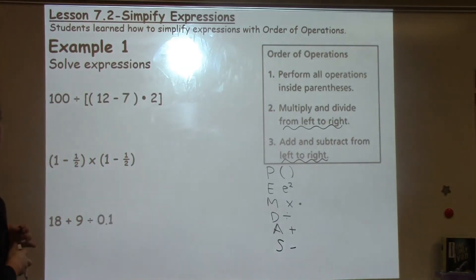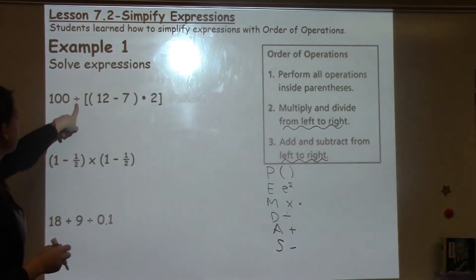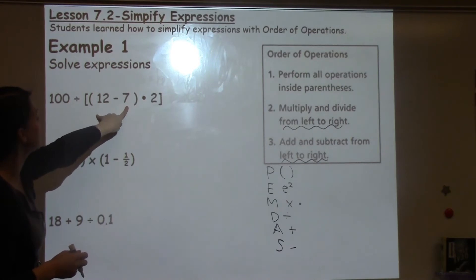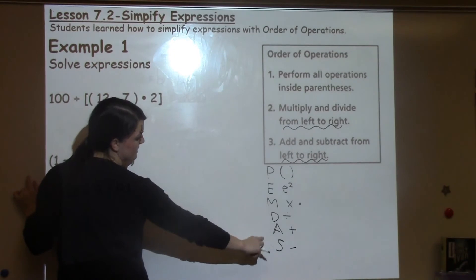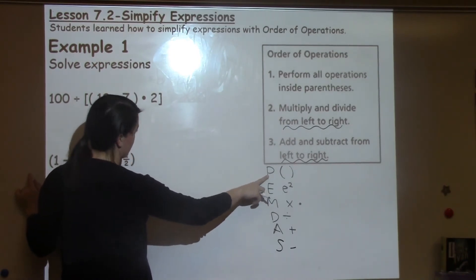So let's go ahead and look at some examples. This one says 100 divided by, in brackets, 12 minus 7 in parentheses times 2. So the first thing that I need to do is follow and I make a checklist as I go. I look for parentheses.